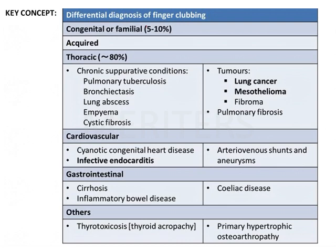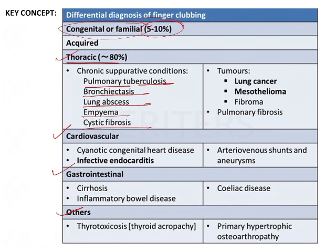For a full differential diagnosis of finger clubbing: congenital or familial cases account for 5 to 10 percent, and the rest are acquired. In acquired causes, thoracic reasons include pulmonary tuberculosis, bronchiectasis, lung abscess, empyema, cystic fibrosis, and tumors such as lung cancer, mesothelioma, fibroma, and pulmonary fibrosis.